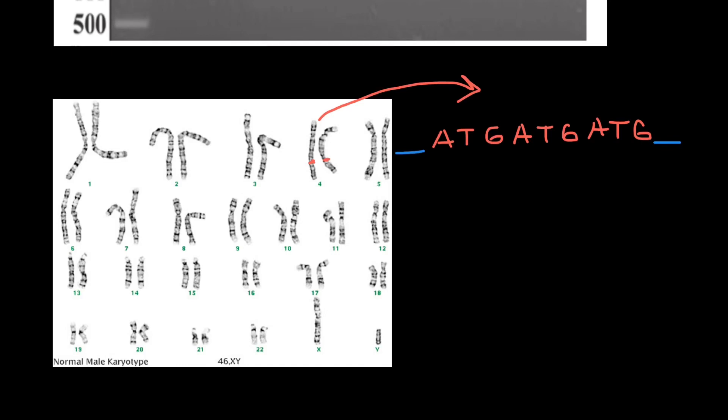This is flanked by a certain known sequence for which we make primers. So using PCR, we can make billions of copies of this sequence. And let's say that from the chromosome we inherited from the mother's side, we have only two repeats of the same sequence, A, T, G, A, T, and G, which is flanked by the same stable sequence for which we have primers.